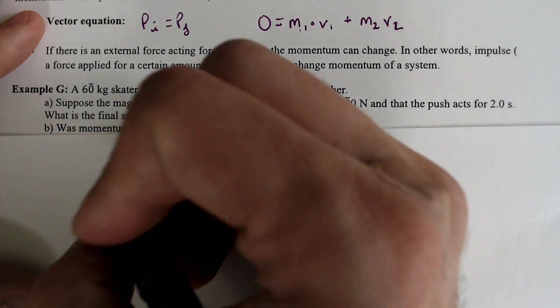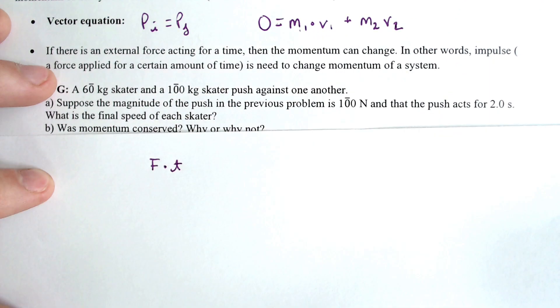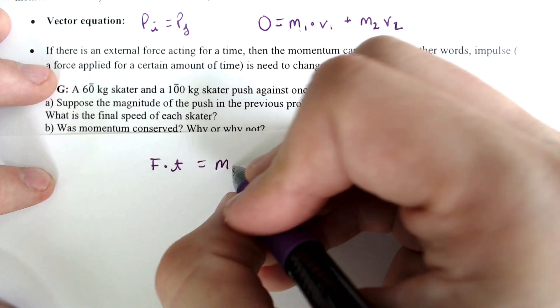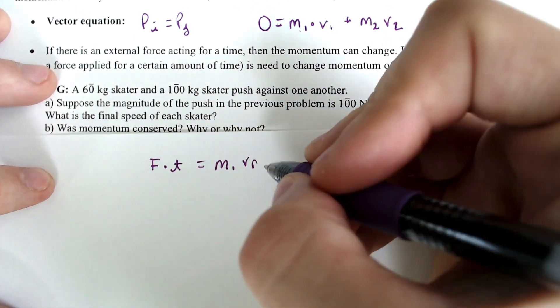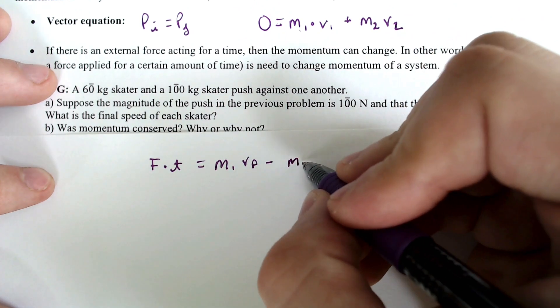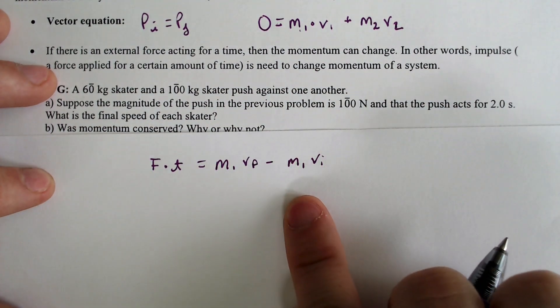so we're kind of moving a little bit away from momentum and more into impulse territory here. So if that's the case, our force times our time would have to equal M1VF minus M1VI.